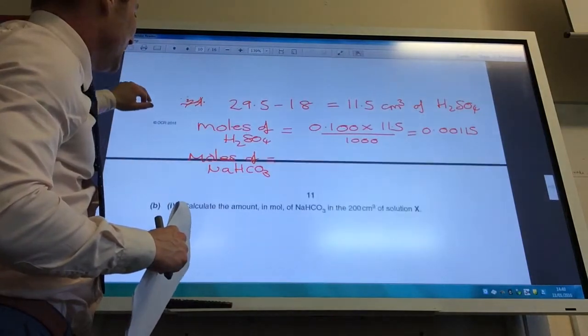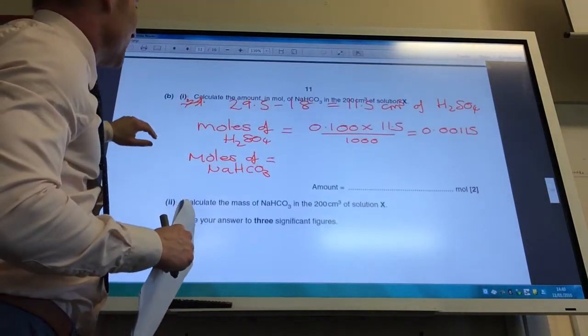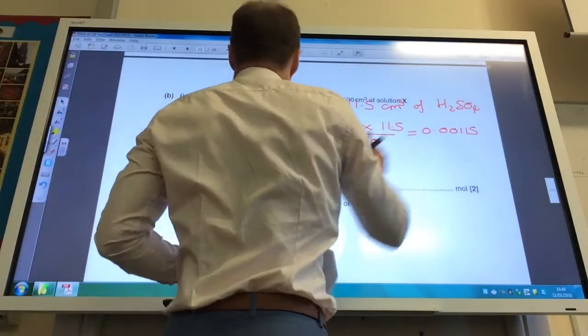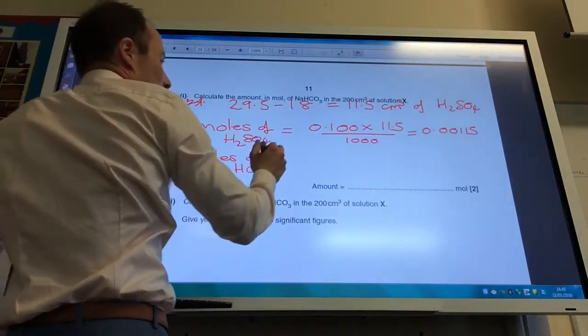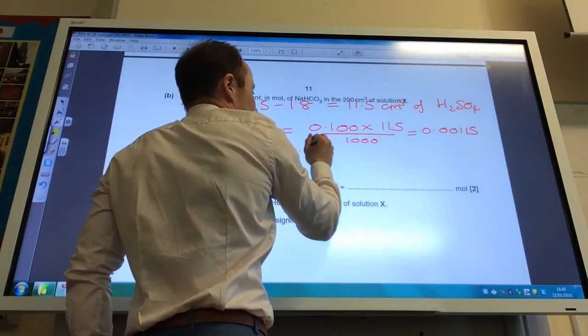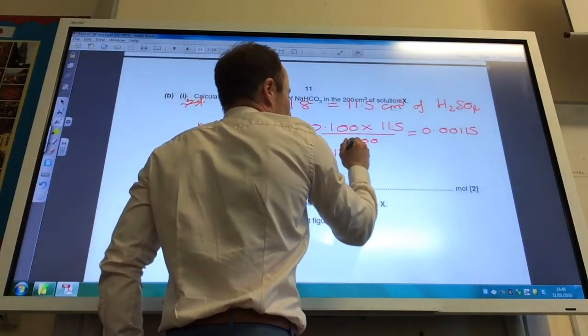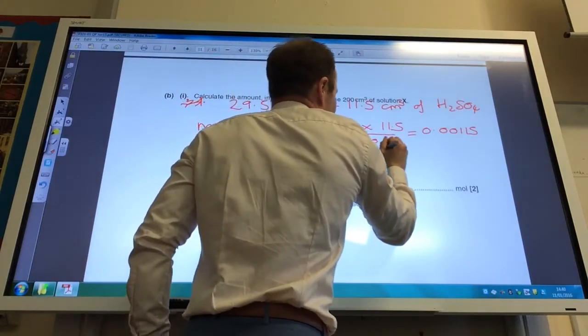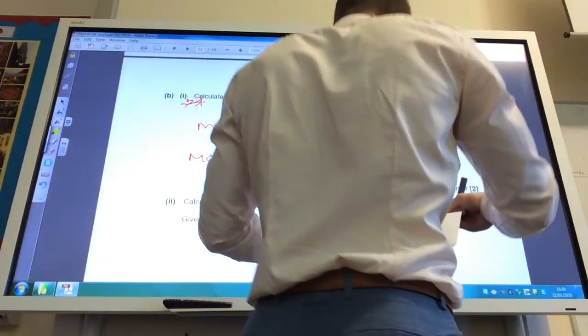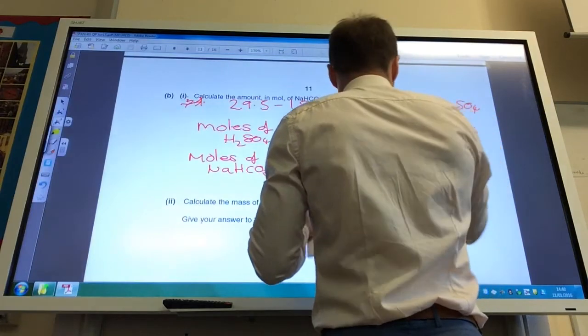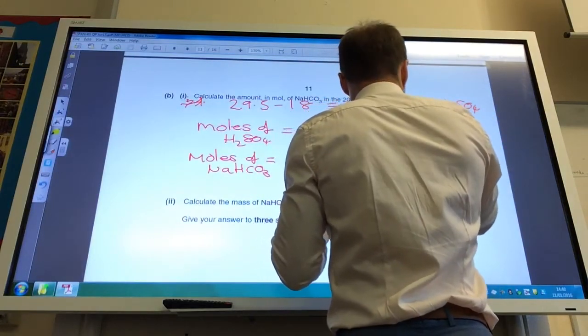So I need to times that number there by 2. So it's 0.00115 times 2, which comes to 0.0023.